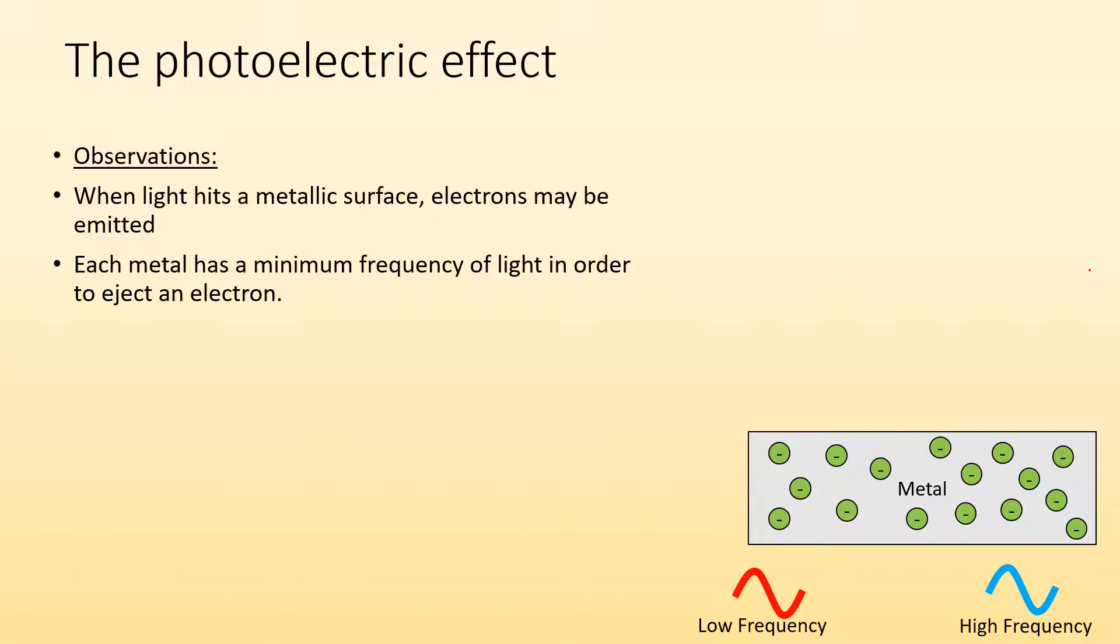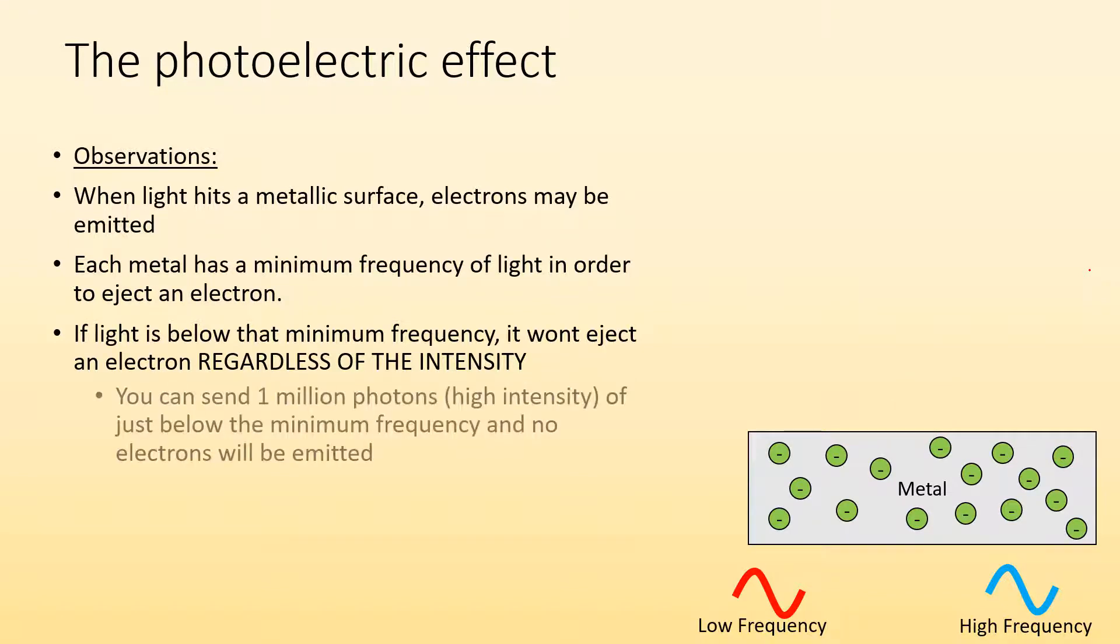Each metal has a minimum frequency of light in order to eject an electron. If the light is below that minimum frequency, it won't eject an electron regardless of the intensity. For example, here's one photon of a lower frequency light. It hits it, gets absorbed, doesn't kick out an electron. We could send a million of those photons, meaning high intensity, it still won't kick off an electron because it's below the minimum frequency.